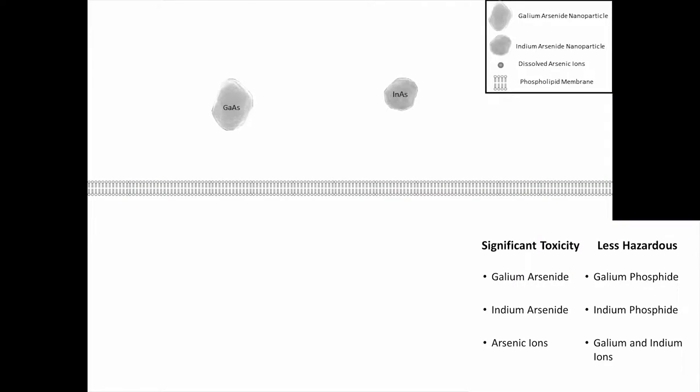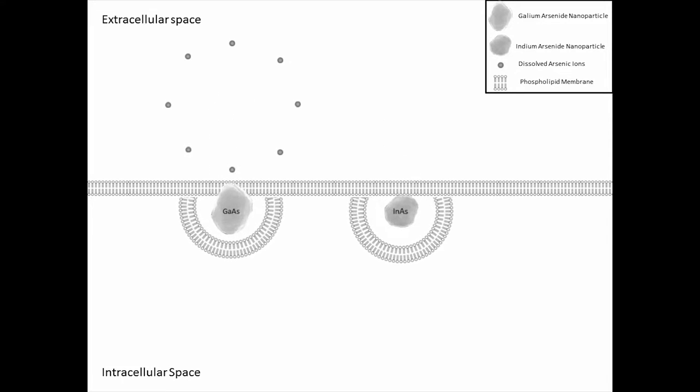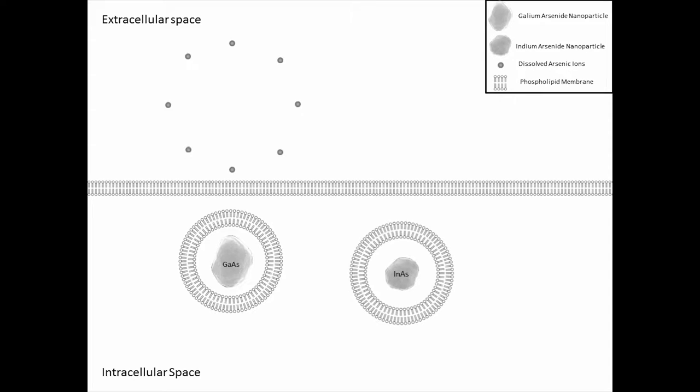The principal mechanism of 3-5 arsenide nanoparticle toxicity is due to the dissolving of the arsenic ions both inside and outside the cells. These results demonstrate that 3-5 arsenide, gallium arsenide and indium arsenide nanoparticles contribute in a major way to the toxicity of 3-5 materials that could appear in slurries.